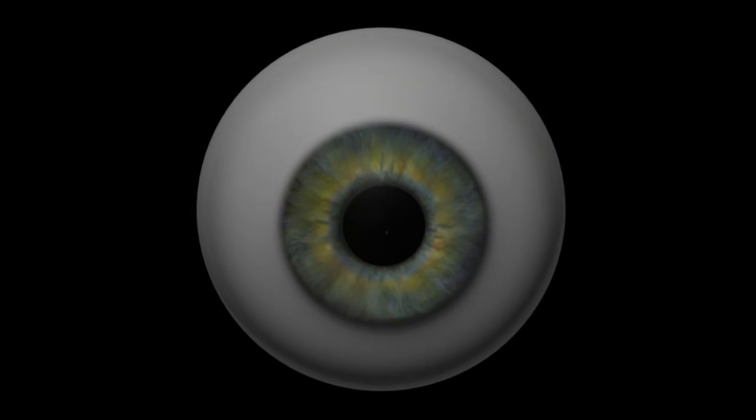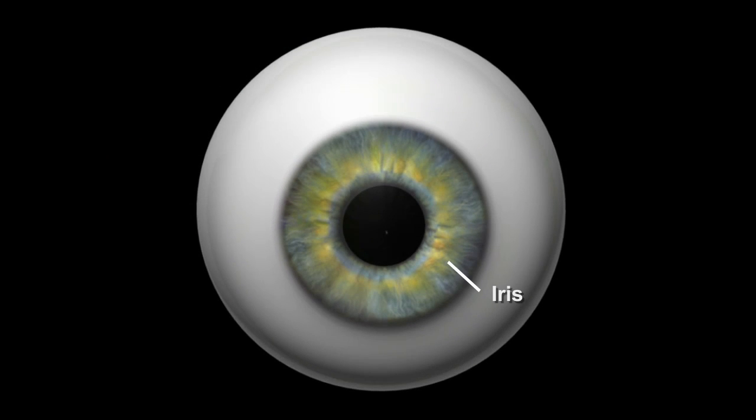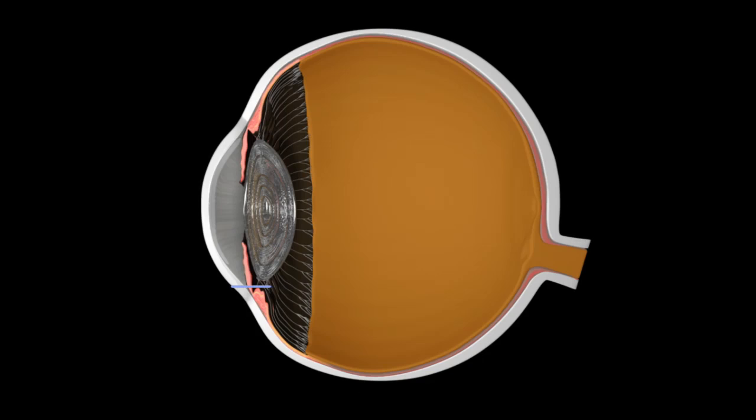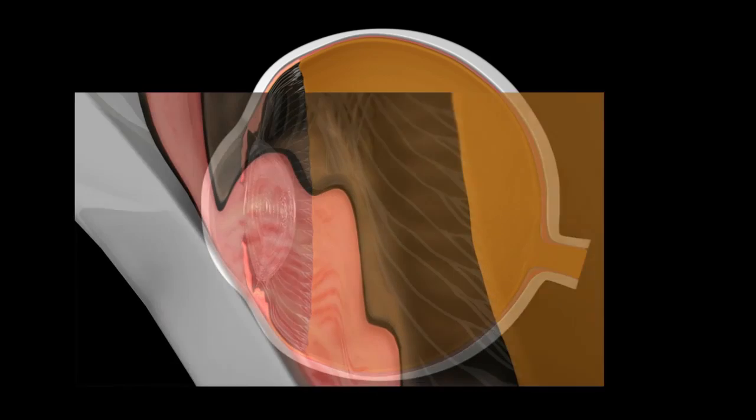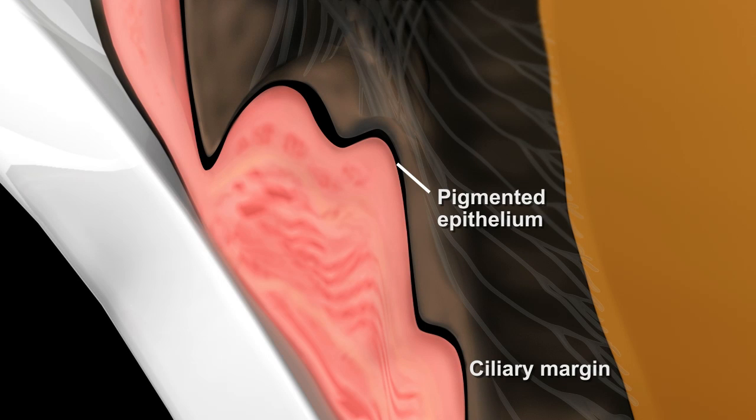Certain parts of the adult body maintain a population of dormant stem cells. One of these populations can be found in the retina of the eye. These retinal stem cells are located within the dark ring around the iris in the pigmented epithelium near the ciliary margin. Of these cells, about 1 in 500 are actual stem cells.